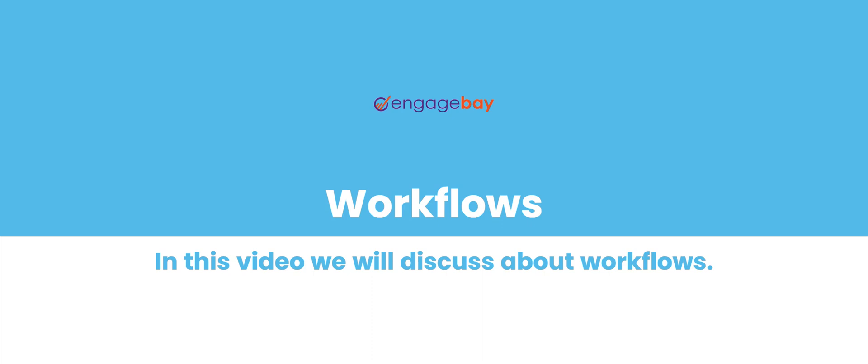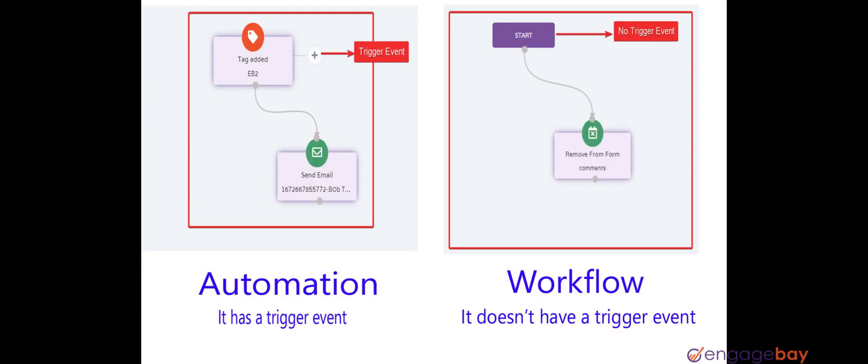Difference between workflow and automation. EngageBay workflow and automation use the same set of actions and conditions. However, the difference between the two is that workflow does not have a trigger event — it has to be started manually by execution. For example, if we had to run a process on contacts that do not satisfy any trigger conditions, then we can create a workflow and add the contacts to the workflow. Please check the screenshot showing the difference between automation and workflow.